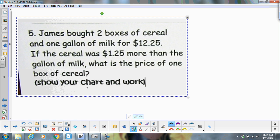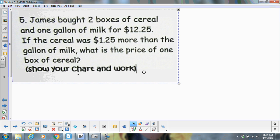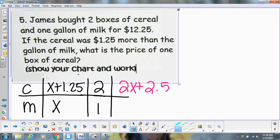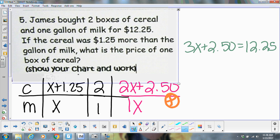Remember we can do our chart here. James bought two boxes of cereal and one gallon of milk for $12.25. Cereal was $1.25 more than the gallon of milk. So we've got cereal and we've got milk. Cereal was $1.25 more than milk, so milk's going to be x. This is going to be x plus $1.25. He bought two boxes of cereal and one gallon of milk, and when we multiply that together, that's going to give me 2x plus $2.50 for cereal, and then 1x for milk. You're going to add that up. That's going to give you 3x plus $2.50. It's going to equal $12.25. Solve from here.